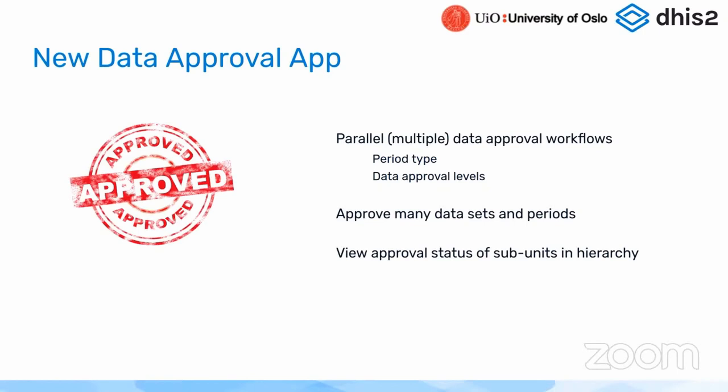With the new approval application we now have the opportunity for creating parallel and multiple data approval workflows, meaning you can have multiple approval streams going on at the same time in the same DHIS2 installation. A data approval workflow has a period type which defines the frequency of approval, and that frequency can actually be lower than the data sets which are part of the workflow. So if you have monthly data sets, you can set the workflow to be quarterly and then approve for three months at a time to make the process more efficient.